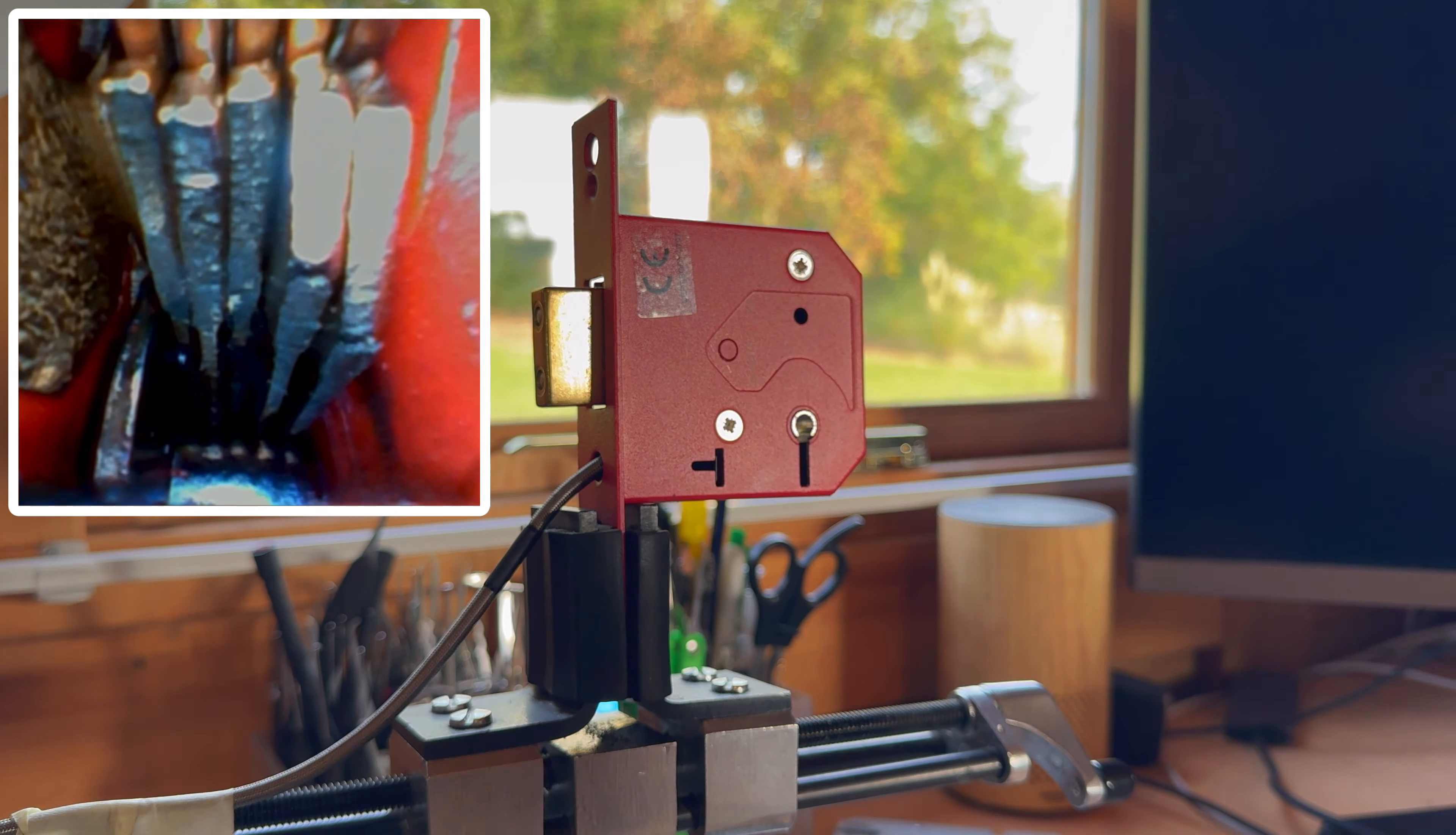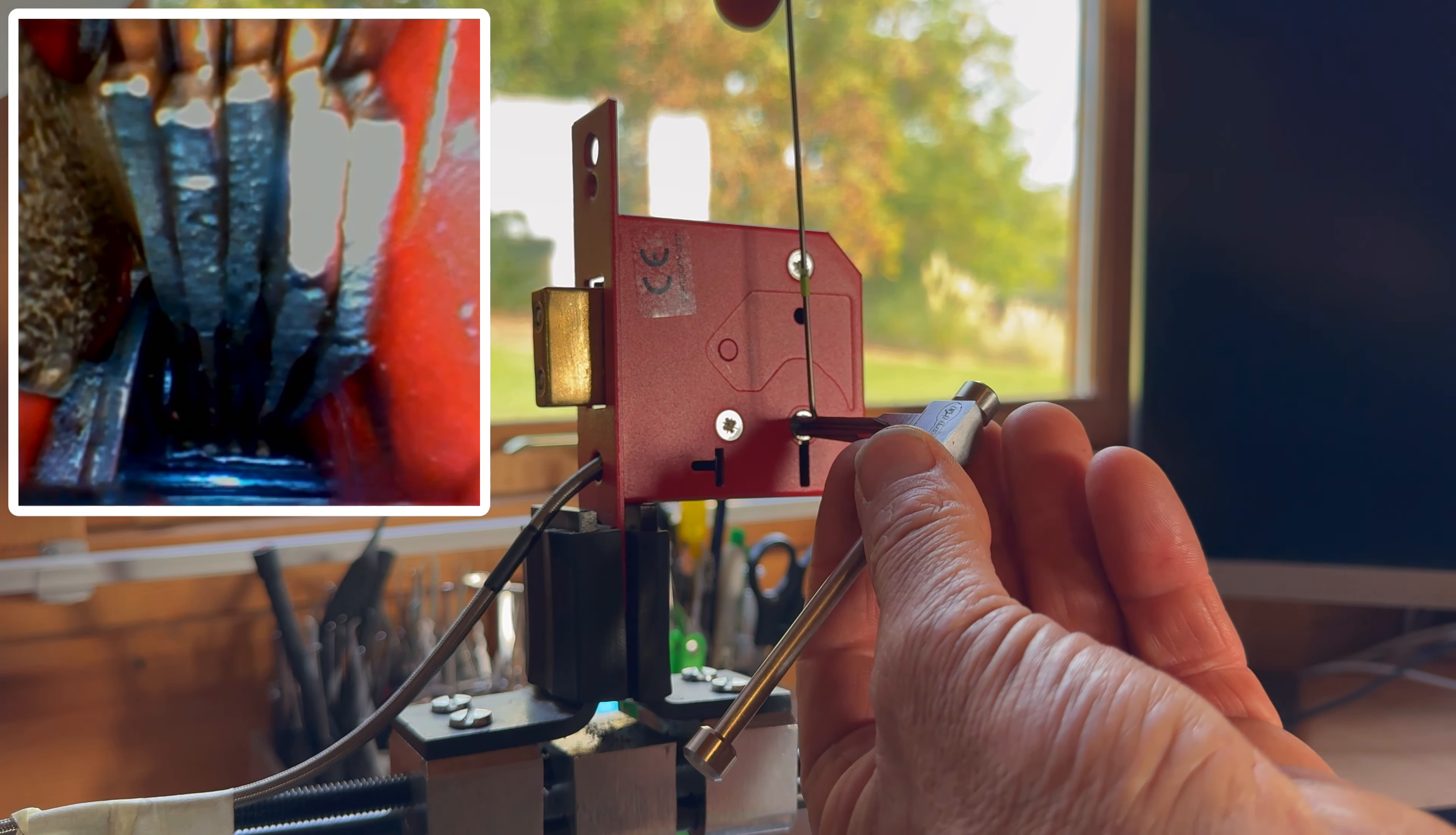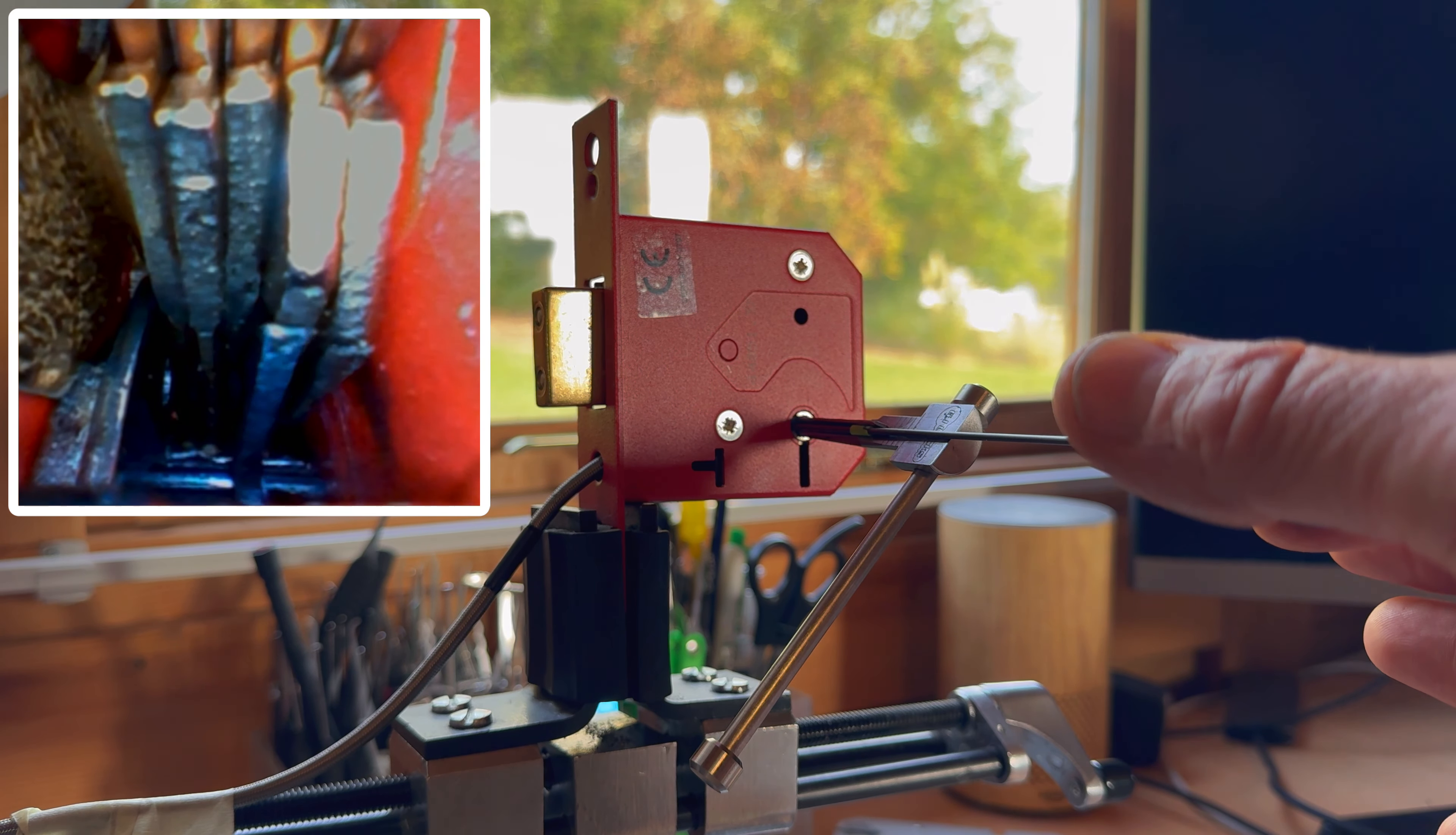So what we can do potentially with this lock—there's no anti-pick on this lock so it's not particularly hard to open—is we can put the wire in and feel along the bottom of those levers.